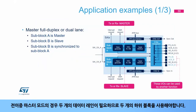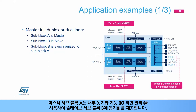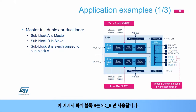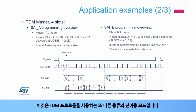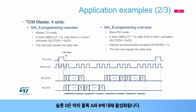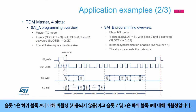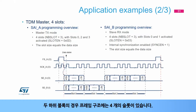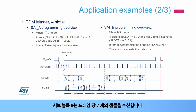For a full duplex master mode, two data lanes are needed, so two sub-blocks need to be used. The master sub-block A provides the synchronization to the slave sub-block B using the internal synchronization feature. Note that in this example, sub-block B only uses the SDB, and the number of IOs is reduced to its minimum thanks to the internal synchronization. This is another kind of full duplex mode using the TDM protocol. Slot 0 is active for sub-blocks A and B. Slot 1 is inactive for sub-block A, and slots 2 and 3 are inactive for sub-block B. For both sub-blocks, the frame structure has four slots. Sub-block A will generate three samples per frame, and sub-block B will receive two samples per frame.